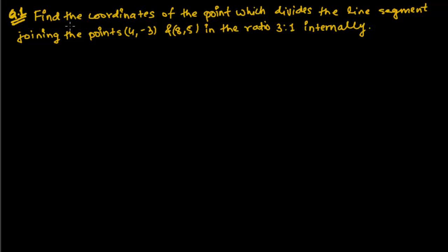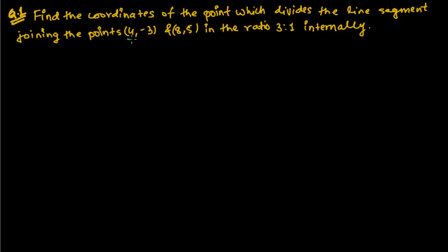Hello friends, this is the first type of problem in section formula. The question is asking to find the coordinates of the point which divides the line segment joining the points (4, -3) and (8, 5) in the ratio of 3:1 internally.